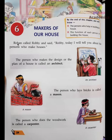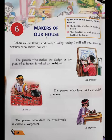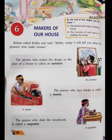Let's start the chapter. Rohan called Robbie and said, 'Robbie, today I will tell you about the persons who make houses.' The person who makes the design or the plan of a house is called an architect. An architect is a person who designs the house — makes its naksha, its blueprint — on paper.